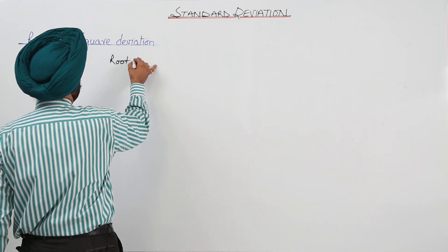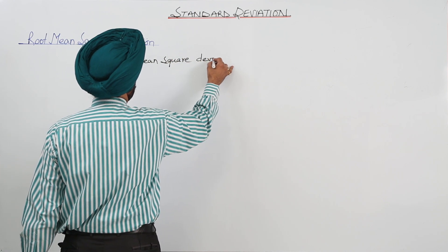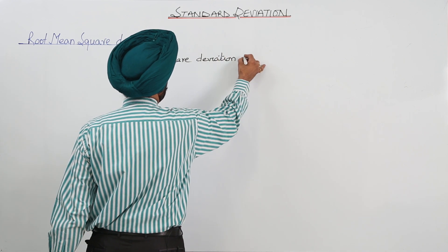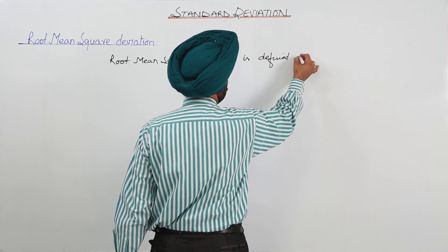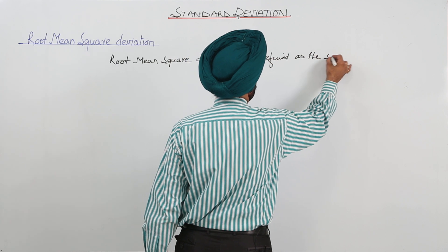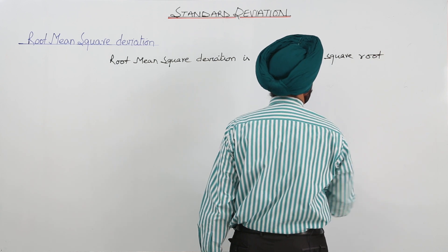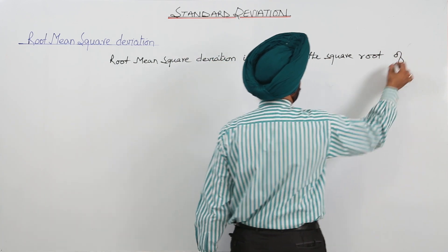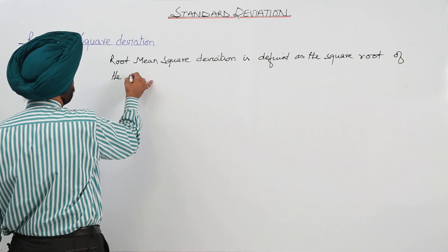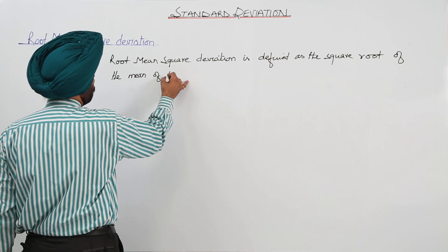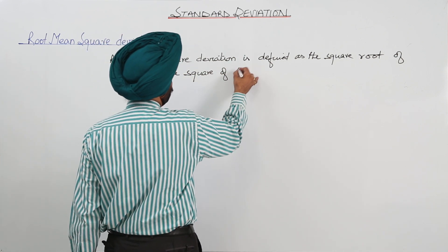Root mean squared deviation is defined as the square root of the mean of the square of the deviations.